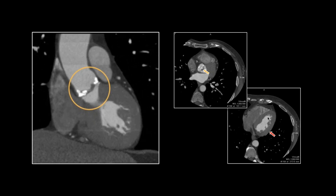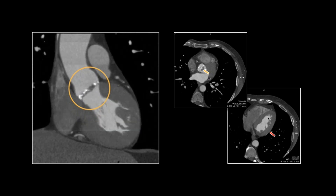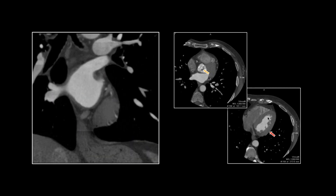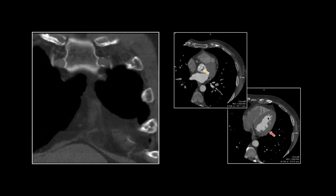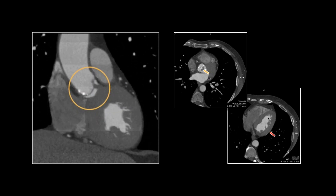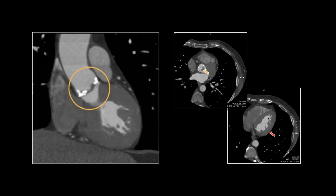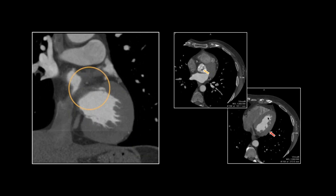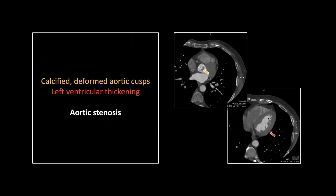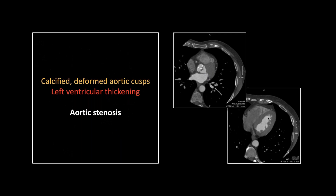There it is on the coronal. Really appreciate the LV hypertrophy, also the thickening of those cusps and their apparent fusion. So that's an aortic stenosis.